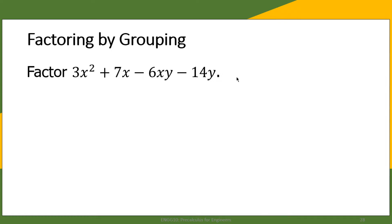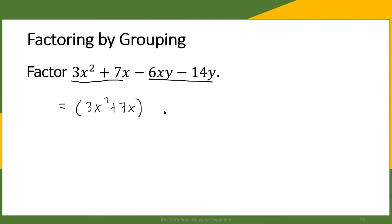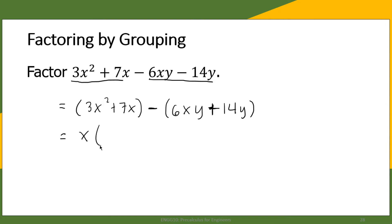But we can actually group the terms so that we can factor out enough from each group. For example, we group the first two terms and then the second two terms. So we regroup them as 3x squared plus 7x, and since this is minus, this will change sign, so this becomes 6xy plus 14y. Remember, this changes sign because of the minus sign.